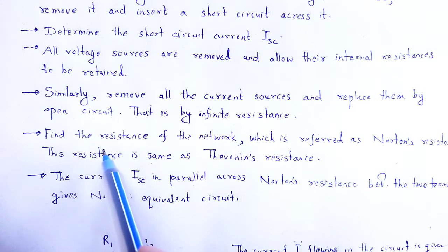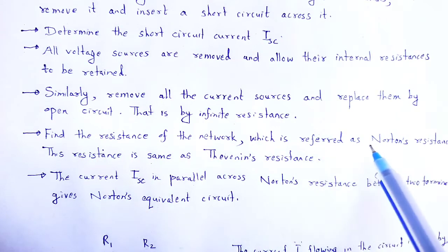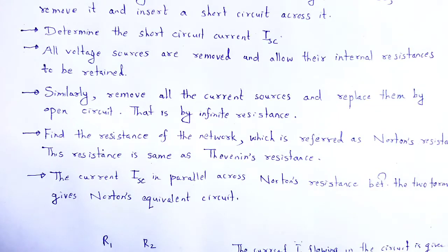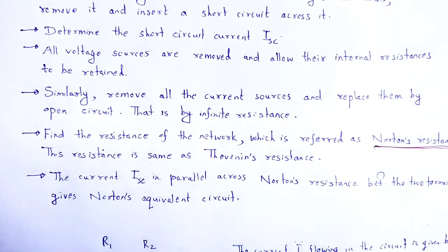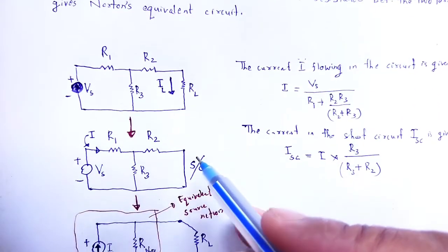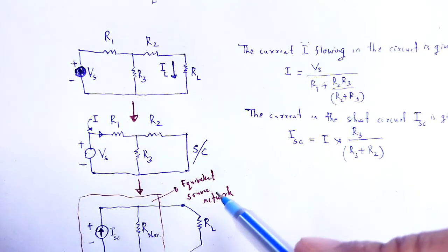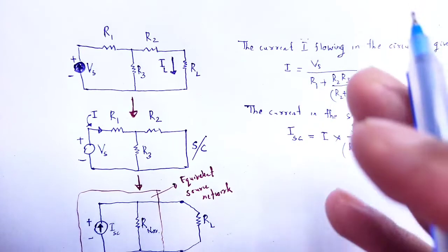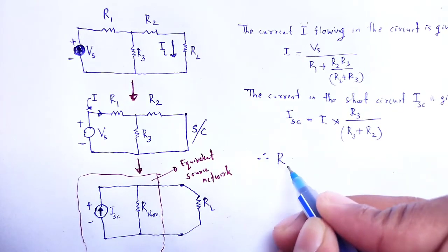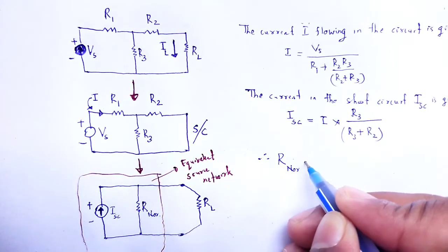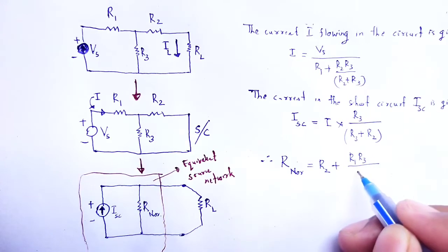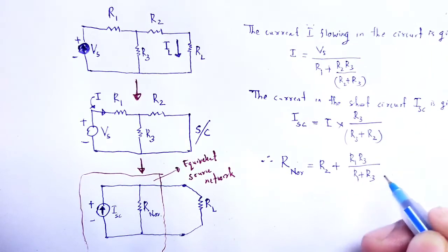Next step: find the resistance of the network, which is referred to as Norton's resistance. This resistance is the same as Thevenin's resistance. Now we calculate Norton's resistance — the short circuit is removed and, as done in Thevenin's theorem, we deactivate the independent sources. Therefore, Norton's resistance RN is given as: R2 plus (R1·R3 divided by R1 plus R3).